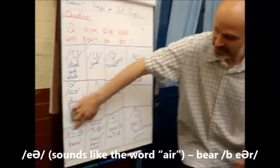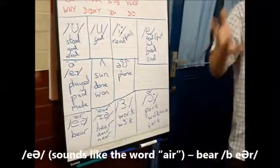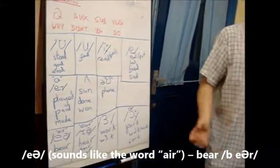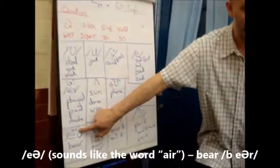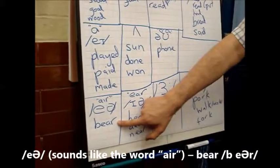Down the bottom we have this diphthong here. E and u together. And the sound? Air. Air. I wrote it here for you. There's the word air. That's how it's written. And the word is bear.